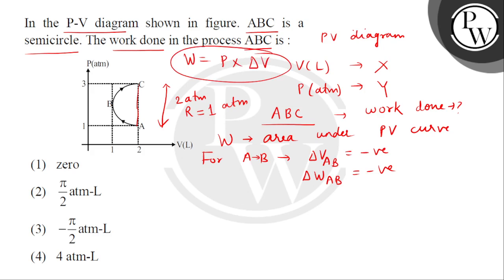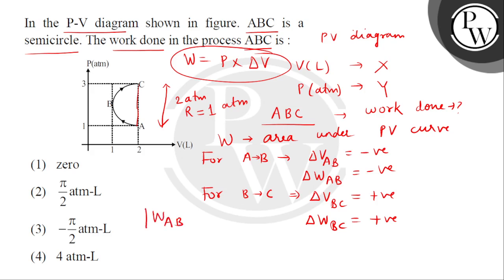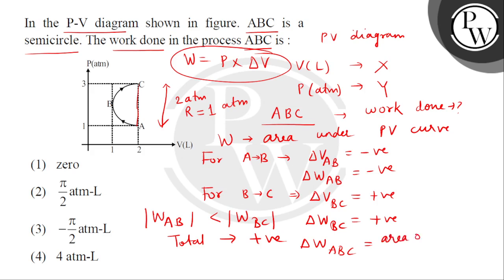For the process B to C, the change in volume is positive, and hence the work done from B to C is also positive. The magnitude of work done from A to B is less than the work done from B to C. Hence, the total work done in the process ABC is positive, and equals the area of the semicircle.